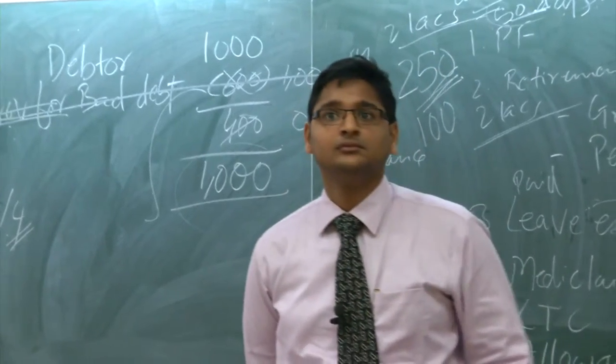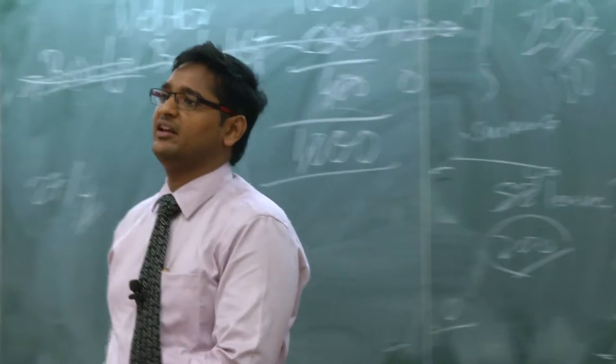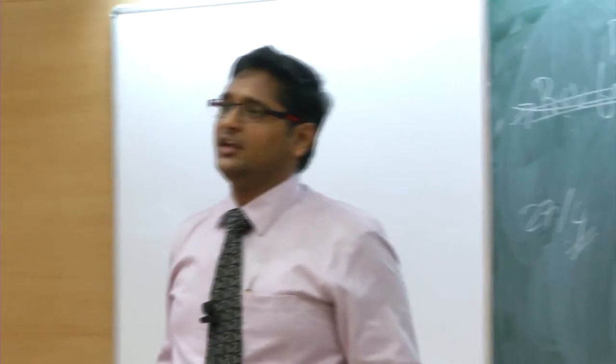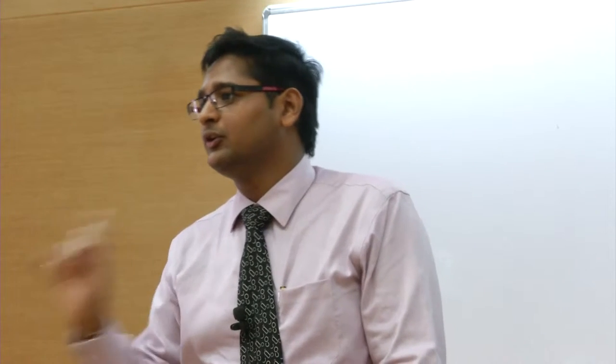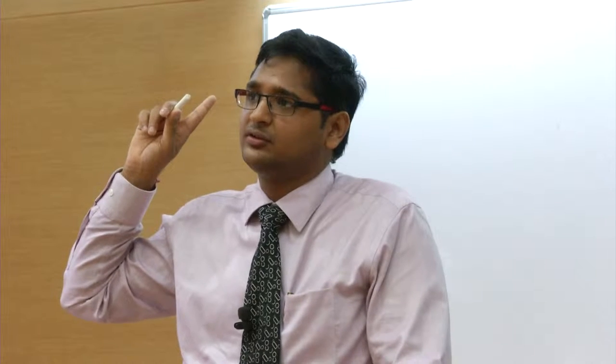A clarification: suppose I have a debtor of 1,000 rupees who becomes insolvent in March but I come to know only in April. The event is coming to know of insolvency in April; the condition is he had become insolvent on 31st March itself. So you go back and adjust - make it a bad debt.